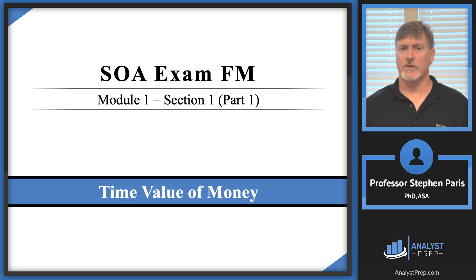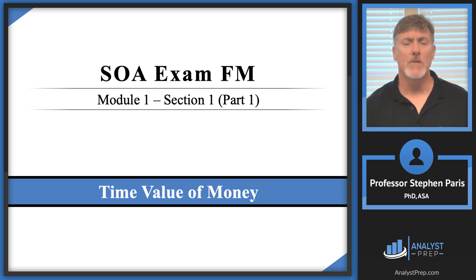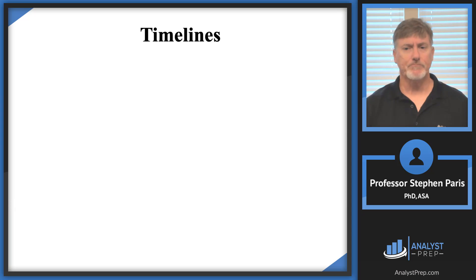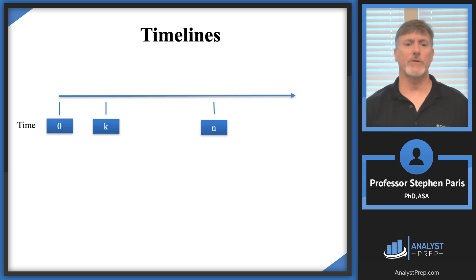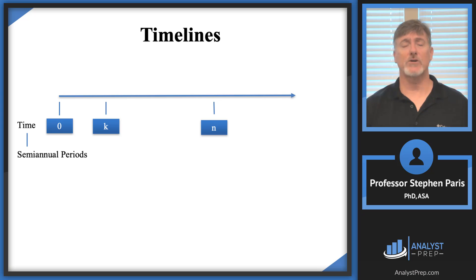A natural place to start the study of this material is with the time value of money. And a natural way to illustrate the time value of money is with a timeline. Timelines are nothing more than number lines. On the bottom of the number line goes a time value — you may start with time zero, then later a time K value, and then a time N value. Common units along the timeline are years, months, quarters, or semi-annual periods.